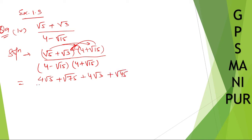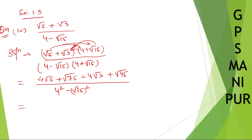I hope this much is clear to you. So a minus b times a plus b gives a squared minus b squared. The numerator becomes 4 root 5 plus root 75 plus 4 root 3 plus root 45, all divided by the denominator.